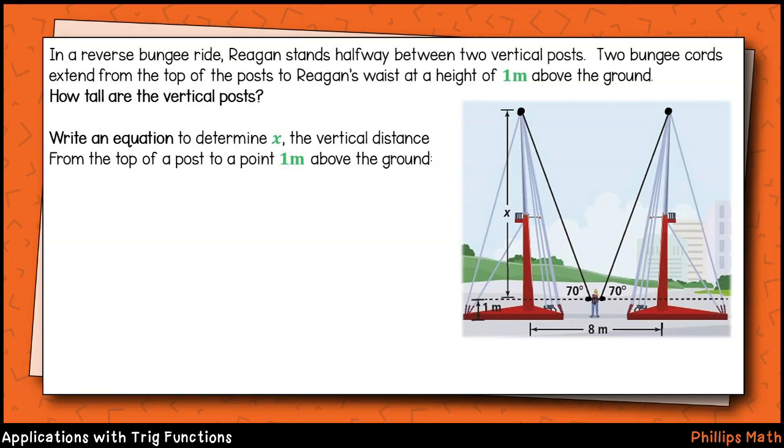We'll want to make a note of a few things in our figure. First, notice that the posts are situated on a stand that is 1 meter tall, so we don't want to forget about that. Next, we see that the rider is halfway between the two poles, which themselves are 8 feet apart. That means that we have two congruent 4-foot sections on each side of the rider.